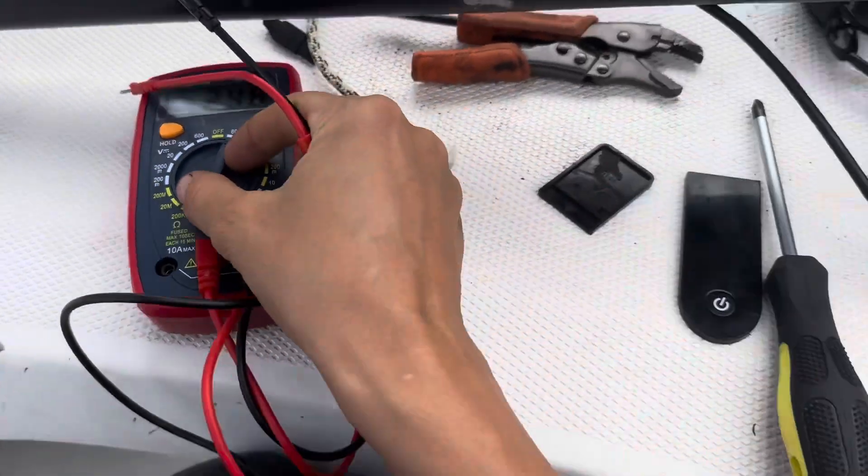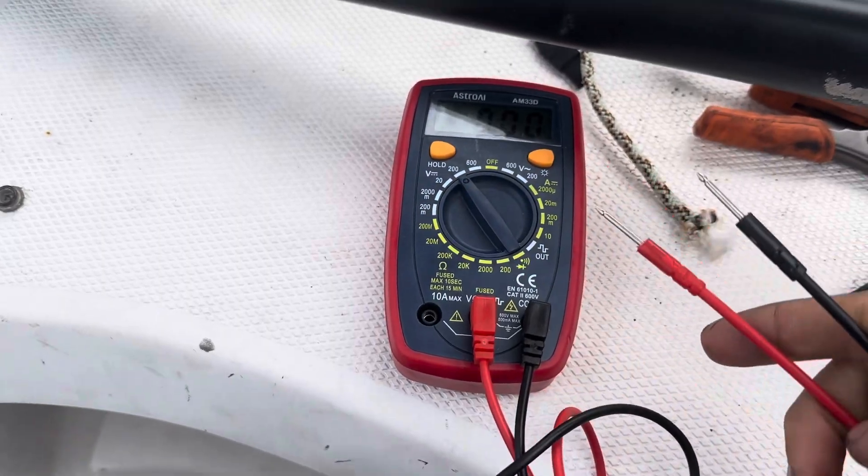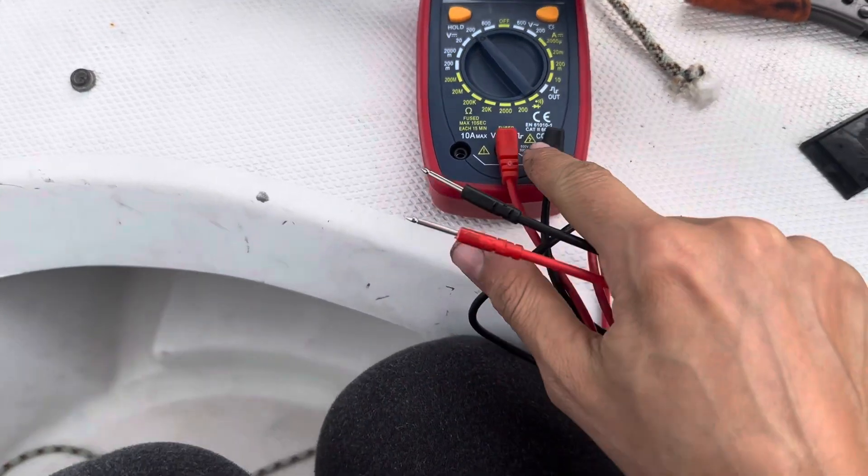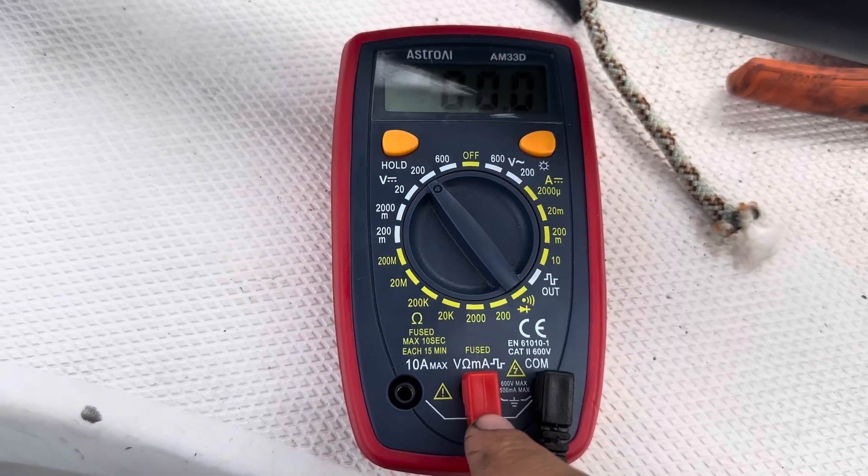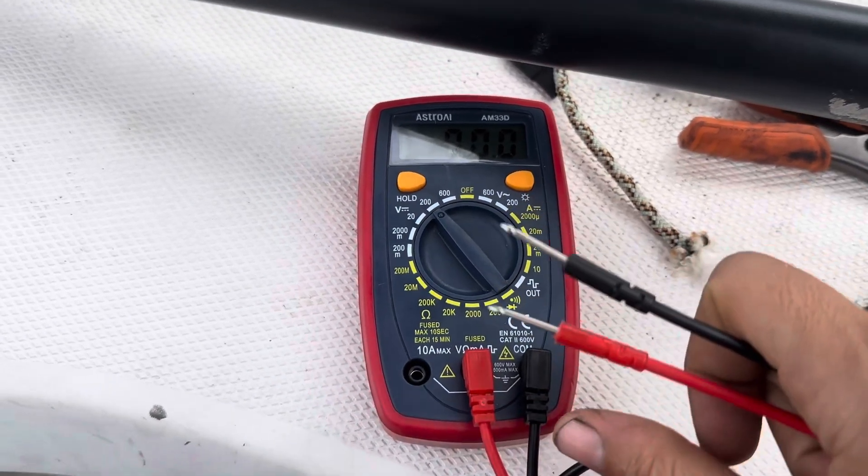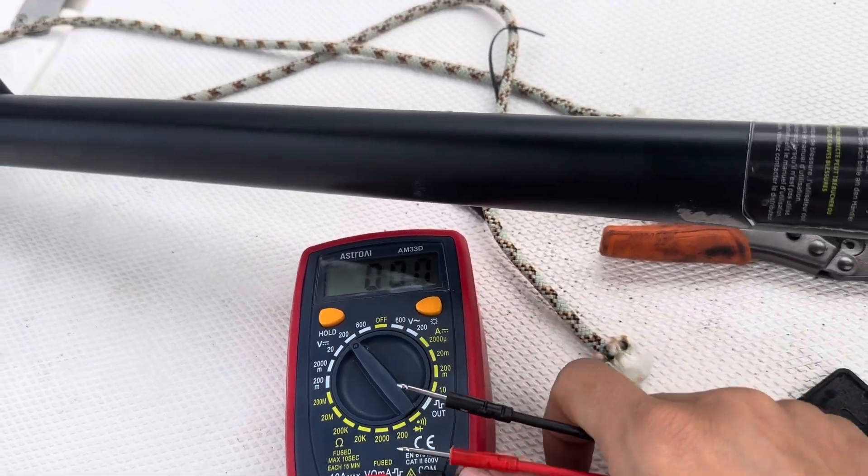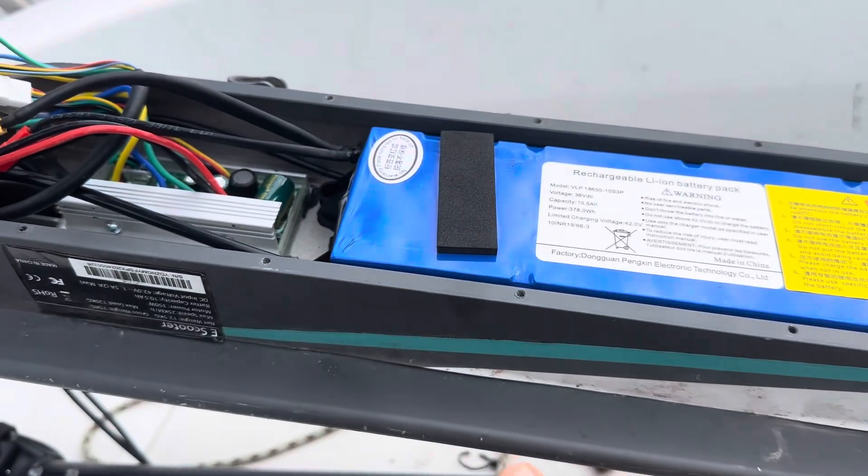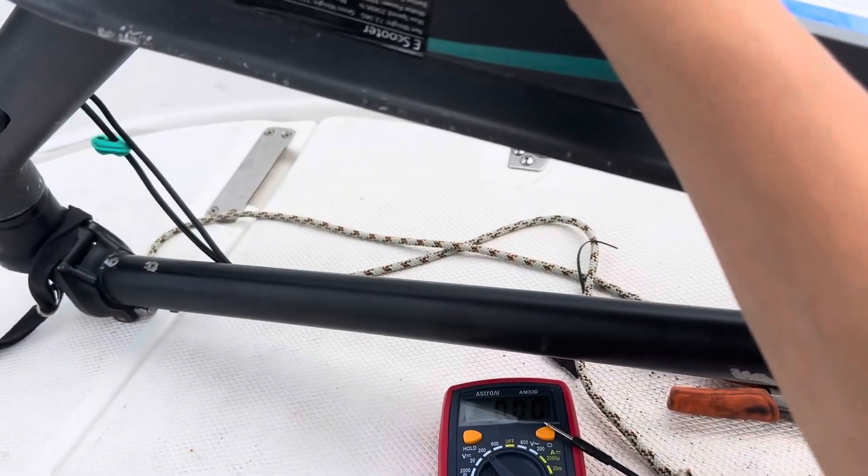Then you turn it to V200. Okay. Black goes on COM. This one goes here. That's for DC. This is if it's higher. Anyway, mine gave like 40 volts, which is okay. Here, I see 42. Okay. Anyway.